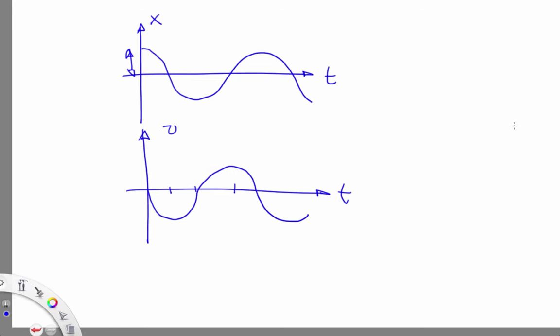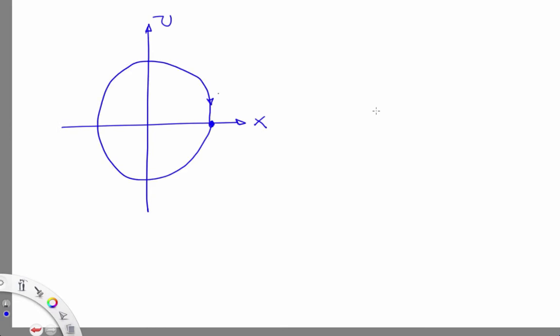If we instead draw this solution in state space, we'll get a circle like this. Note that this representation de-emphasizes time and brings out the patterns in the relationship between the state variables as well as their evolution.